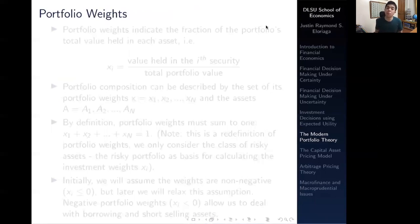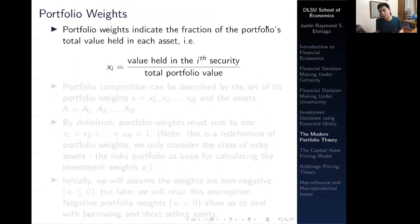Let's discuss portfolio weights. This is what is going to be searched for in our Markowitz model. Portfolio weights indicate the fraction of the portfolio's total value held in each asset. Note that this is each asset, not each asset class, although those two might intersect. We define Xi as a portfolio weight, which is the value held in a security i divided by the total portfolio value.